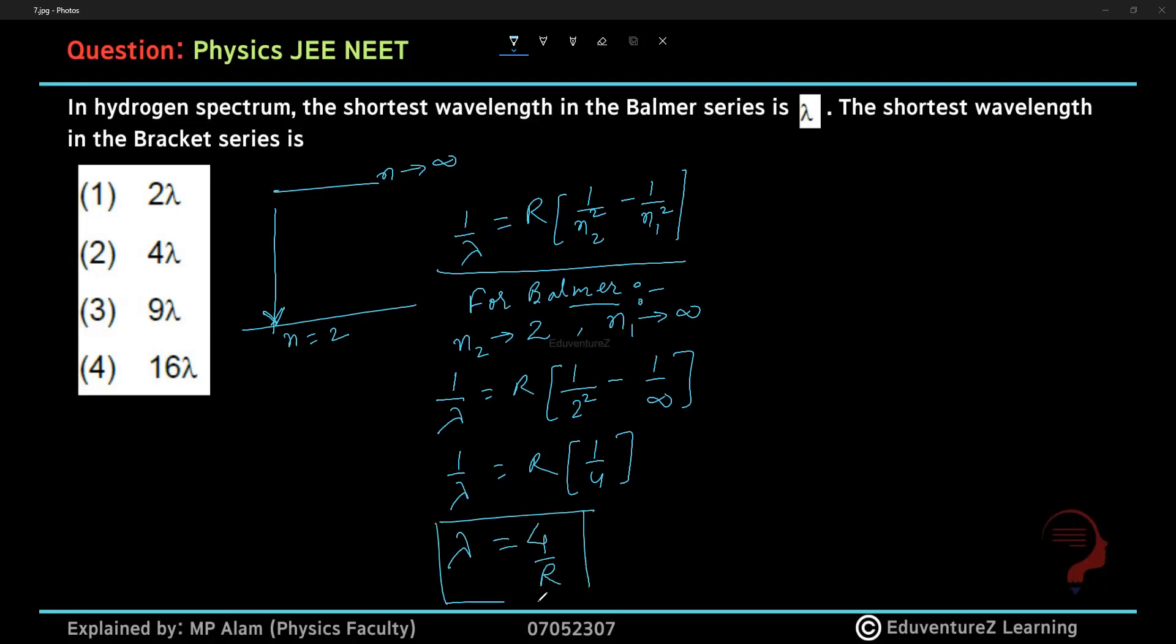This value is the wavelength emitted here. If we talk about the Bracket series, then you have to see the transition is to the fourth orbit from infinite. So the wavelength emitted, let's say lambda dash.